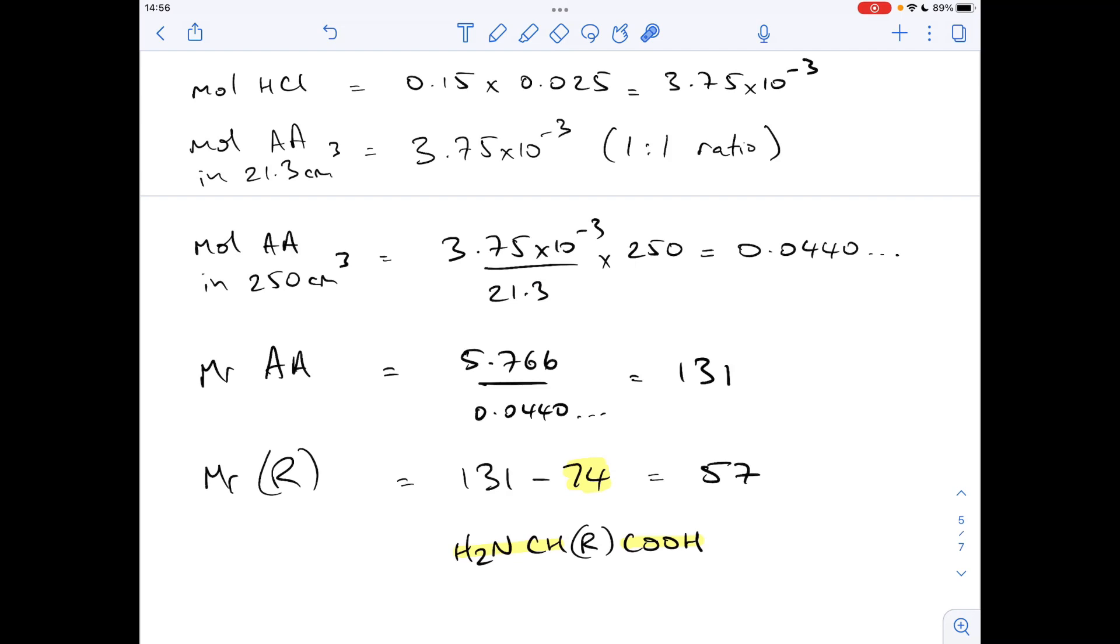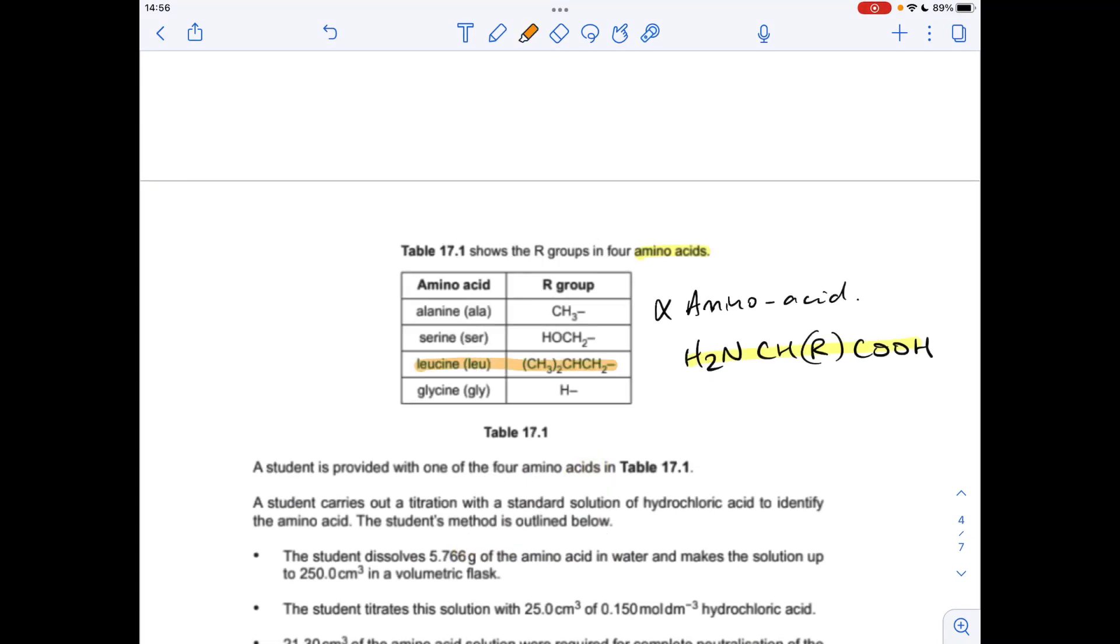So all we need to do now is go back to that table of R groups and see which one has an MR of 57. And the answer is Leucine.